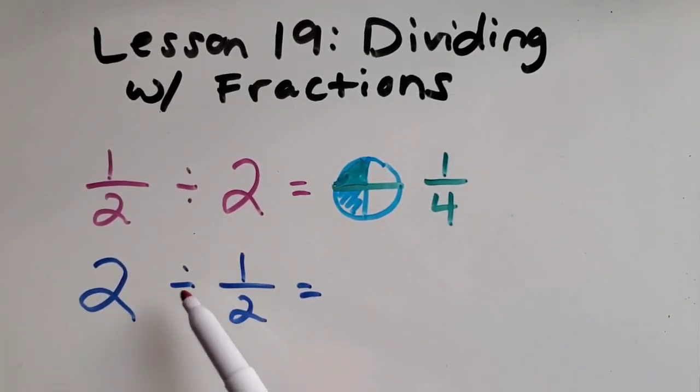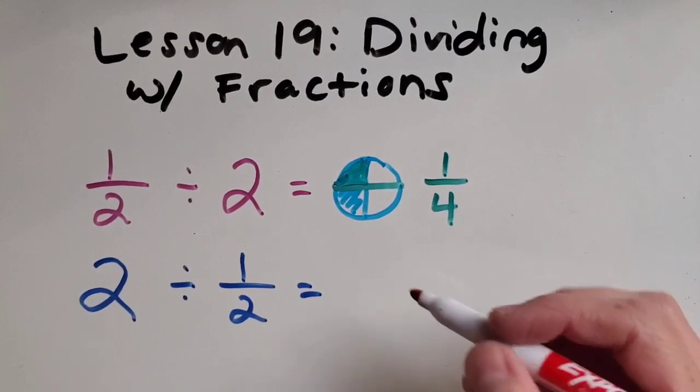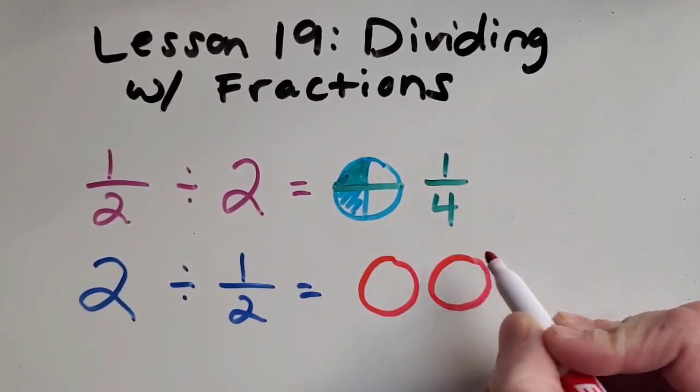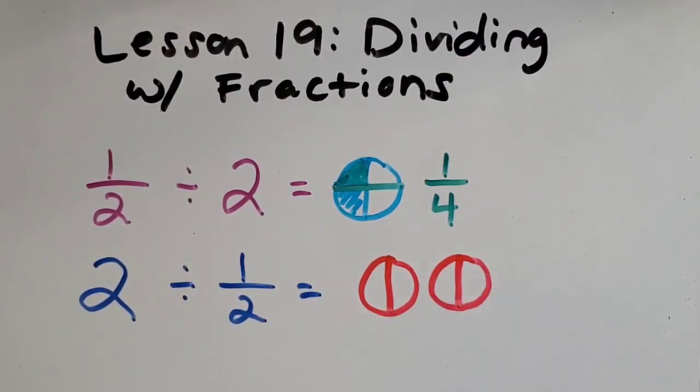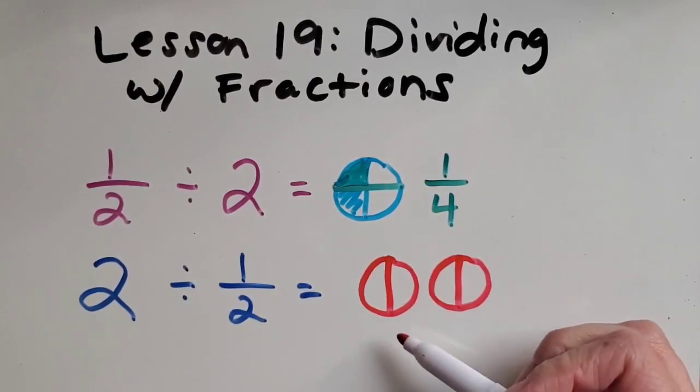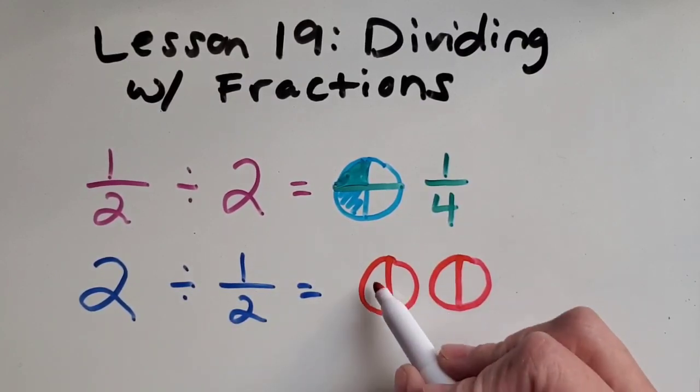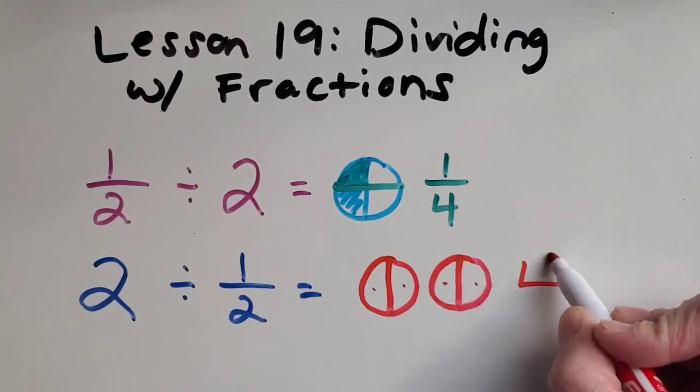My other type of problem is a whole number divided by a fraction. I started with a really easy example for this type too. If I had two cookies and I want to divide them up into halves, I can cut each of those into halves. I'm not going to shade anything because I just want to count how many halves I ended up with. I have one, two, three, four. So my answer is four.